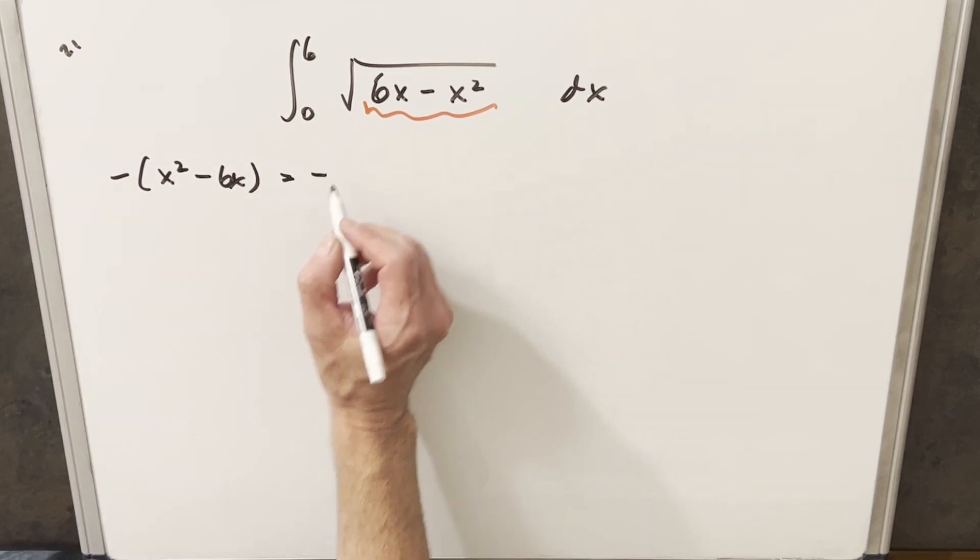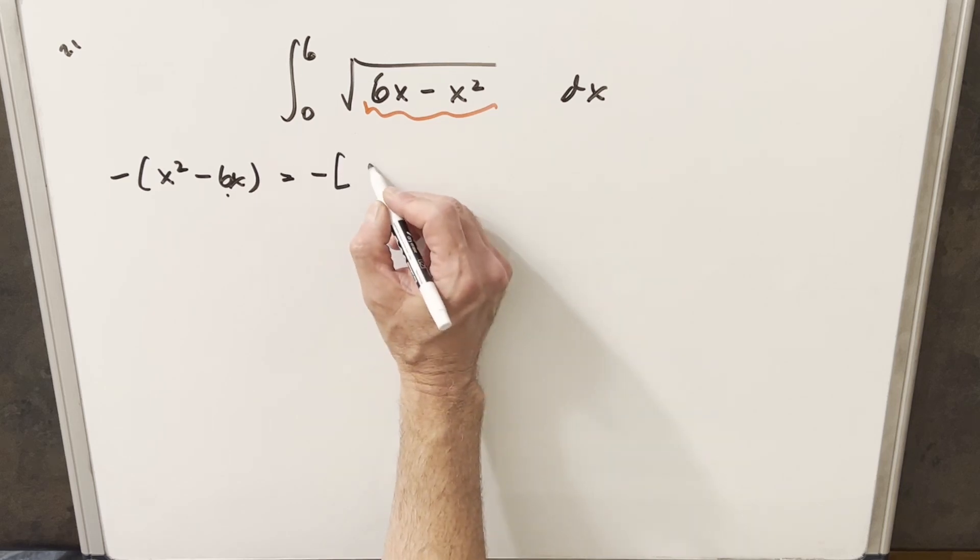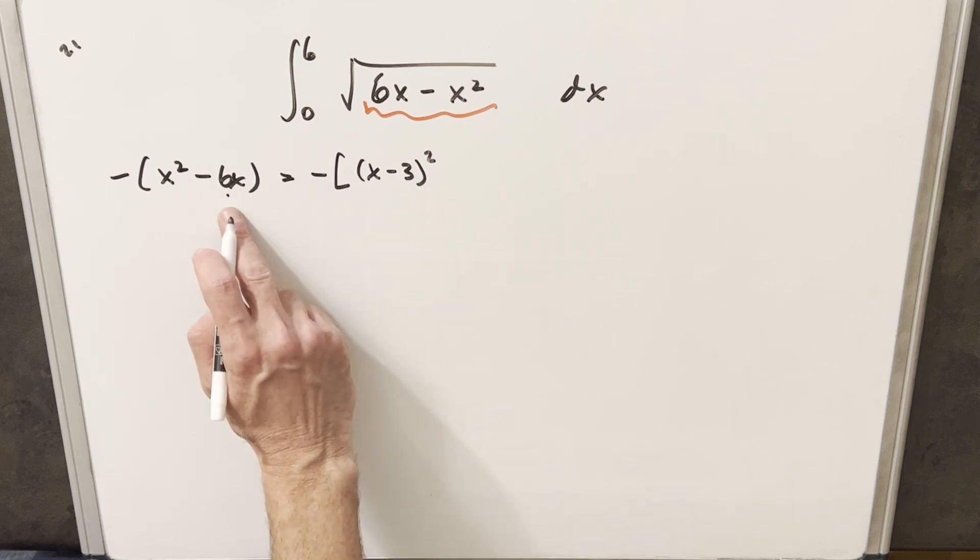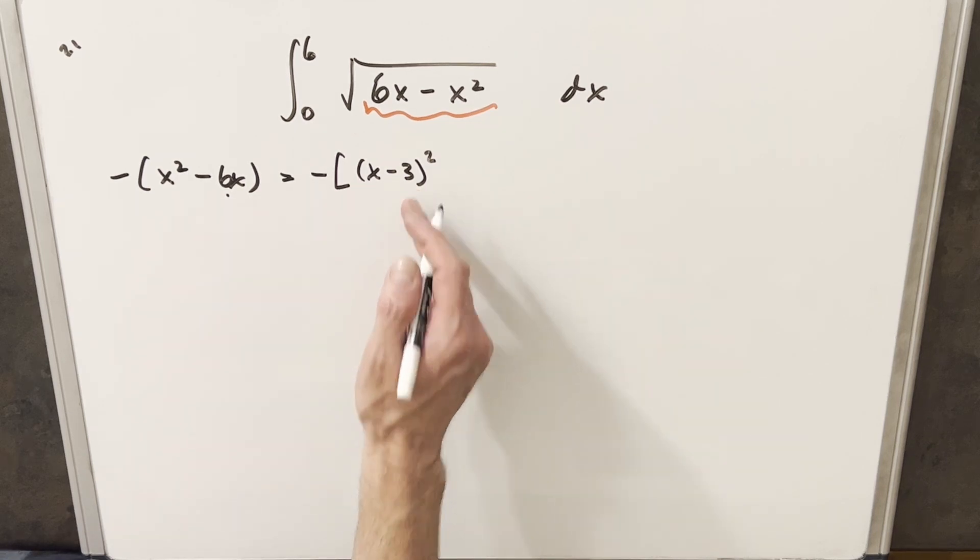And then from here, when I complete the square, I'm going to take this 6 and divide by 2. So I'm going to have x minus 3, and then when we square that, we're going to get x squared minus 6x, but then we're going to have a plus 9.